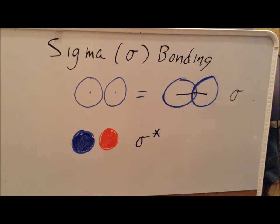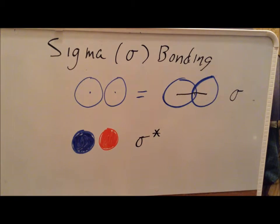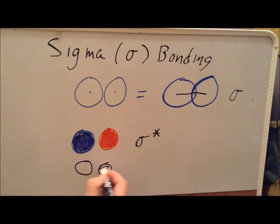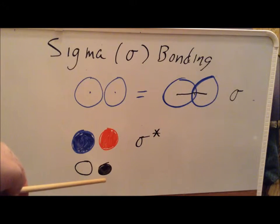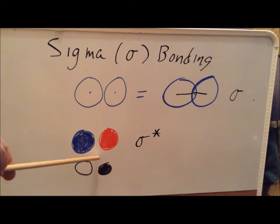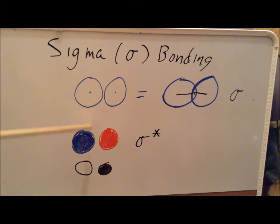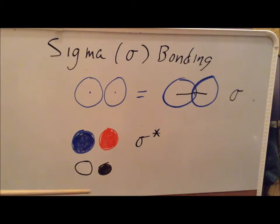The typical way you would see this written in a book — particularly an older book — would be as follows: one circle is open and the other is filled. This conveys the same information as the color diagram. The two 1s orbitals have different phases, so this gives us an antibonding orbital.